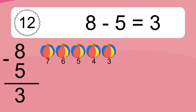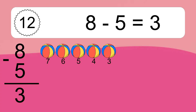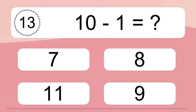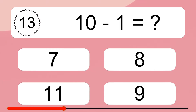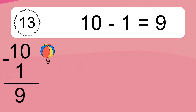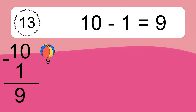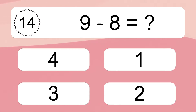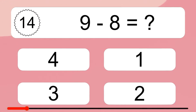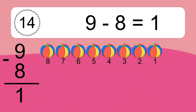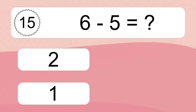17 minus 5 equals 12. Let's count it: 16, 15, 14, 13, 12. 8 minus 5 equals what? 8 minus 5 equals 3. Let's count it: 7, 6, 5, 4, 3. 10 minus 1 equals what?